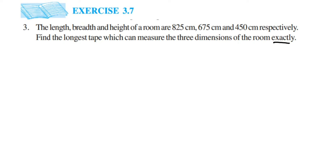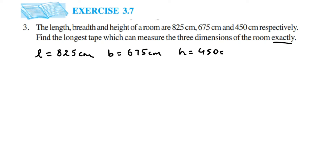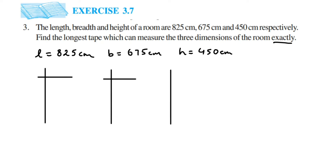So we're going to find the highest common factor of the three given numbers. Length is equal to 825 centimeters, breadth is equal to 675 centimeters, and height is equal to 450 centimeters. We're going to use the division method — prime factorization — and then take the common prime factors from each. The first number is 825.